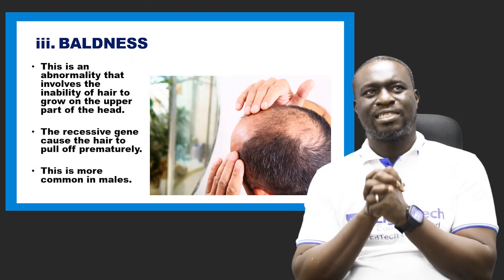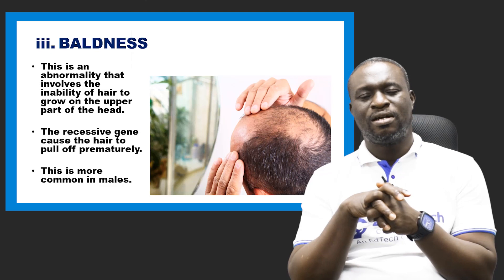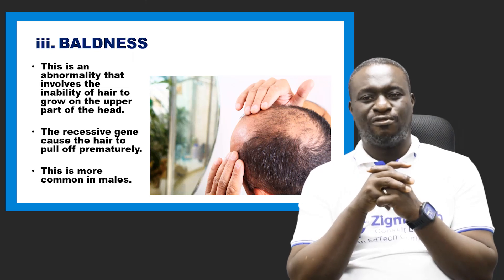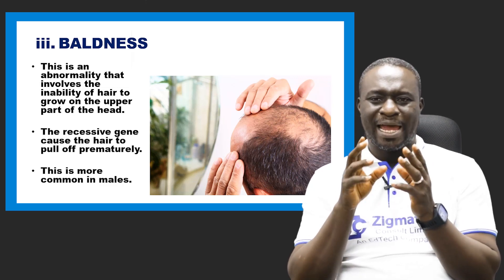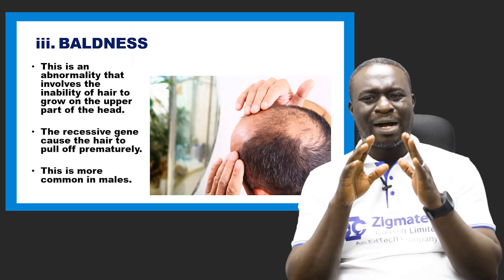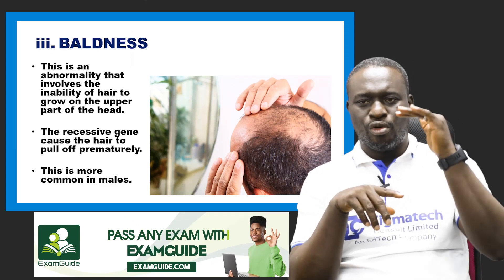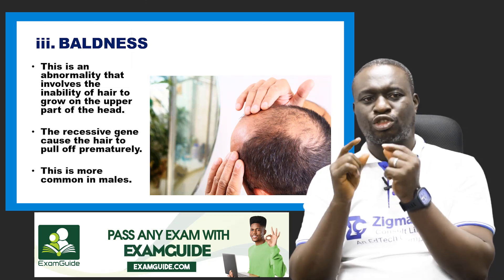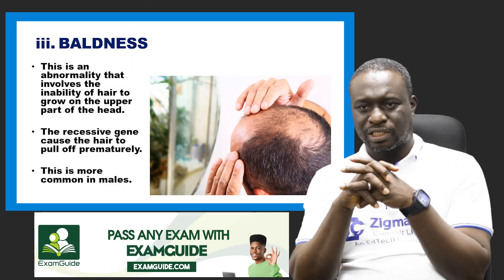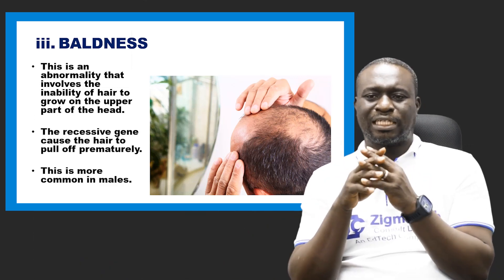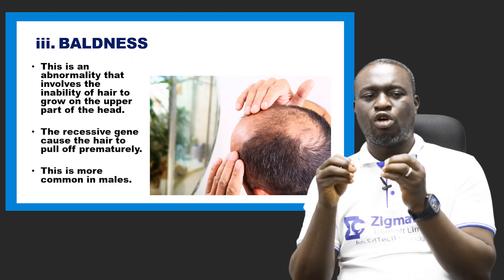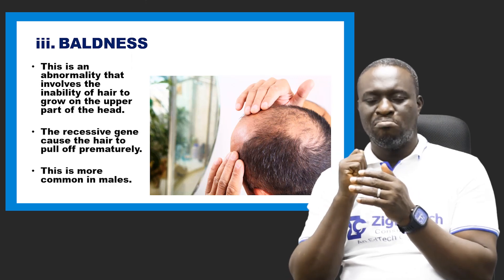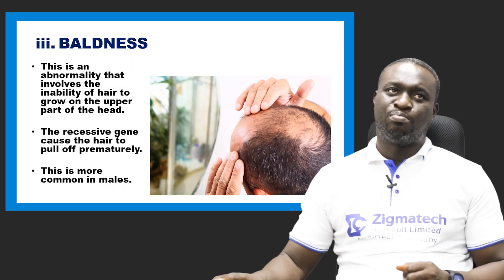Another example of a sex-linked character is baldness. Baldness is an abnormality that involves the inability of hair to grow on the upper part of the head. This happens mostly to males. The recessive gene causes the hair to fall off prematurely, and this is often common in males.